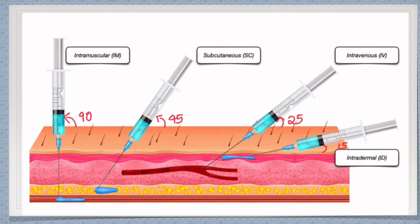This figure will give you an idea of where the tip of the needle should be while giving intramuscular injections, compared to other injections like subcutaneous, intravenous, and intradermal injections. It also gives you an idea of the angle of inclination while giving these types of injections.